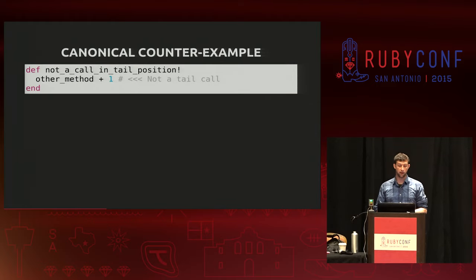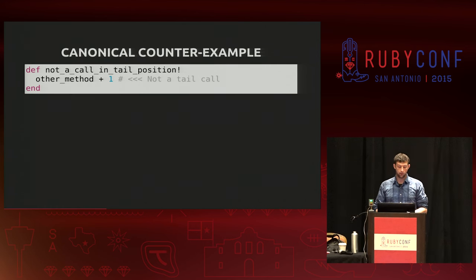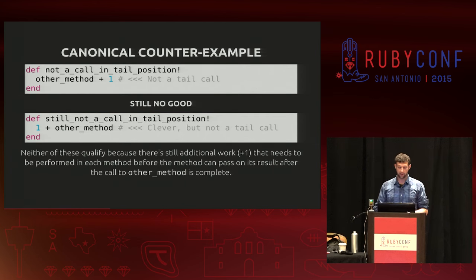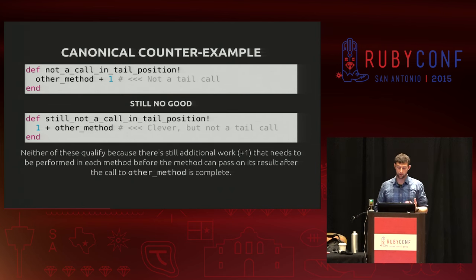To contrast that with the counter-example: you have 'not a call in tail position,' which calls other_method and then adds one to it. This defies the definition because other_method is not the last action — you still have to add one. And if you're thinking 'what if we do one plus other_method?' — still not a tail call, because once the result of other_method comes back, we still have to add one to it.